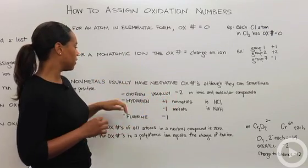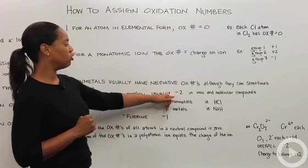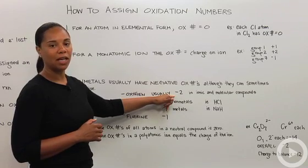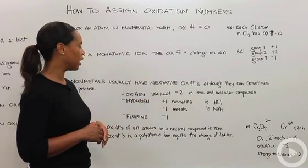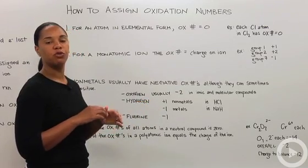Oxygen, for instance, usually is minus two in both ionic and molecular compounds. The exception for that is a peroxide, and peroxides are O2 with a two minus charge.